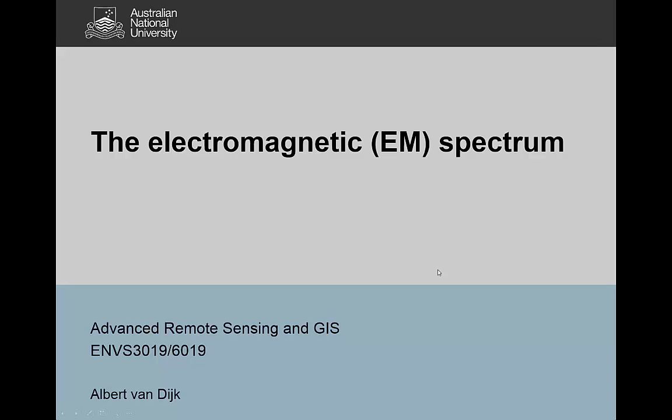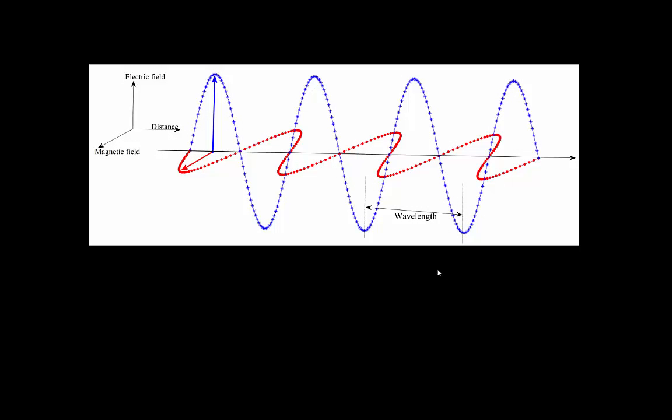Hi, this is Albert van Dijk, and in this short video I'd like to briefly talk about some of the fundamental properties of electromagnetic radiation and about the electromagnetic spectrum or the EM spectrum for short. Although this is not a physics course, you've got to understand some of these fundamental properties of radiation to be able to apply them in a remote sensing context.